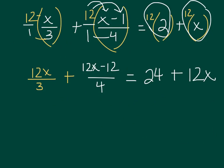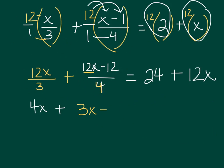Now I'm going to come through and do my next step, which is dividing. I need to do 12x divided by 3 — well, 12 divided by 3 is 4, so this becomes 4x. Plus, I have 12x minus 12 divided by 4 — that means I have to divide both terms by 4. So 12x divided by 4 gives me 3x, minus 12 divided by 4, which is 3. Then equals, on the other side, I just have 24 plus 12x.